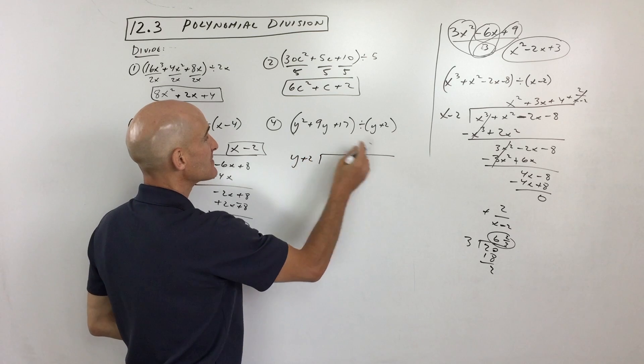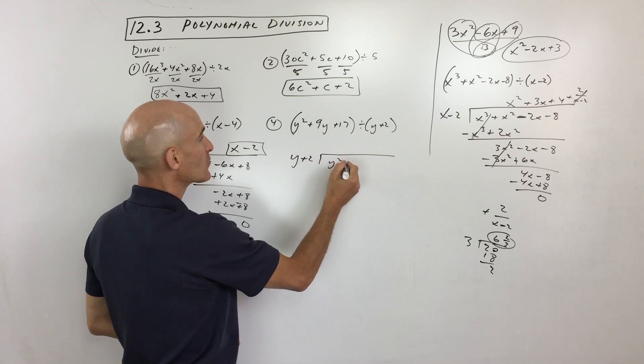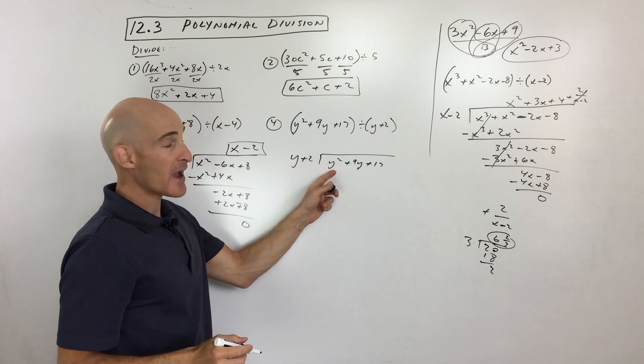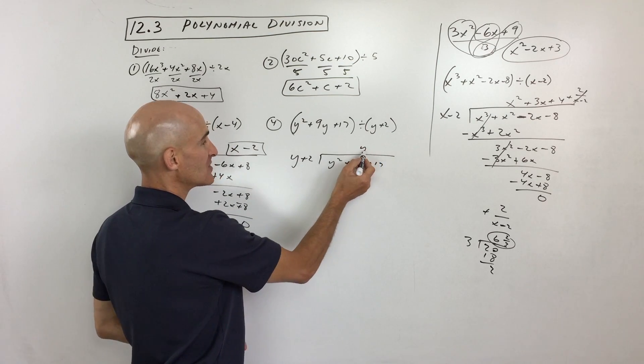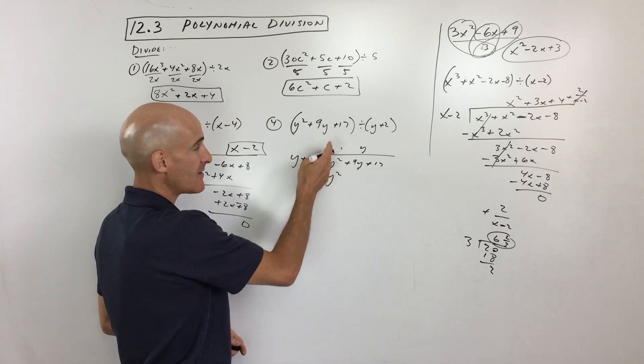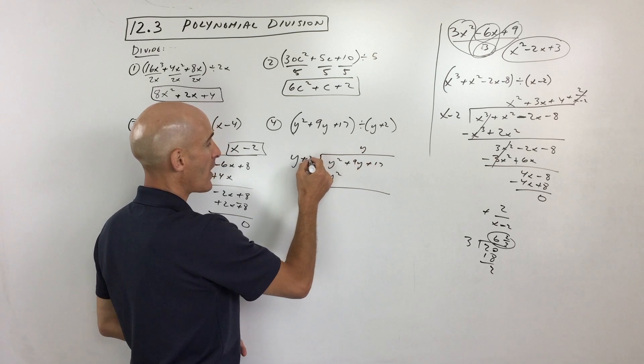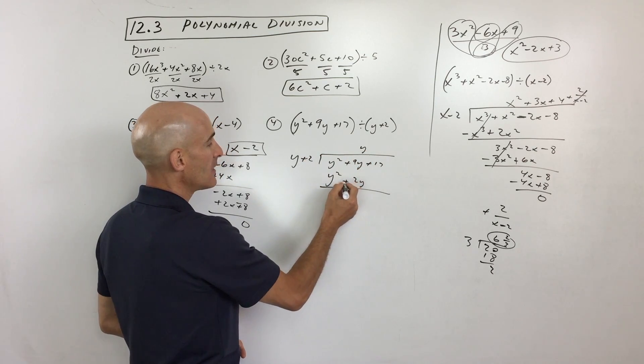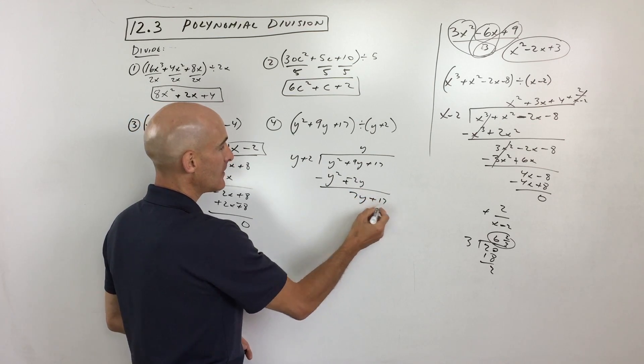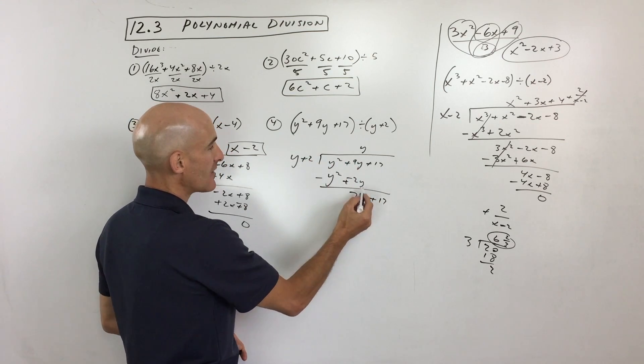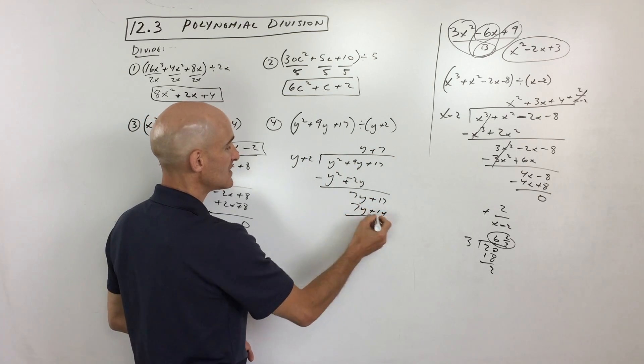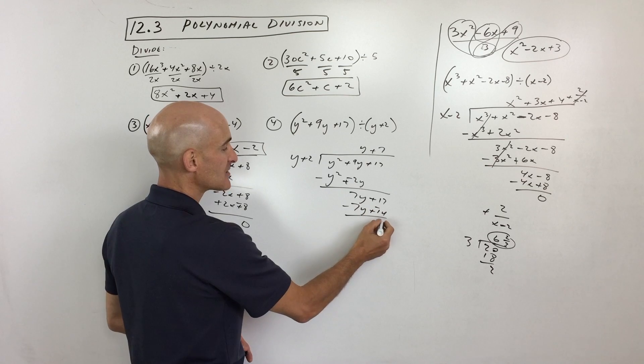y plus 2, we're seeing how many times that goes into y squared plus 9y plus 17, right? So how many times does y go into y squared? y times. And you can see when you distribute, you always want these first terms to be the same so when you subtract, they cancel out. y times 2 gives you 2y. We subtract, which is like changing the signs to the opposite and then we just add straight down. How many times does y go into 7y? Seven times. If we distribute, we get 7y plus 14. Change the signs to the opposite, we have three remaining.